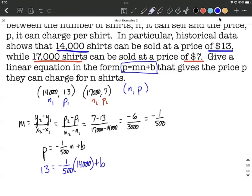So we still don't know what B is, but we can go ahead and combine together negative 1 over 500 times 14,000, and that's going to give us 13 equals negative 28 plus B. And to solve for B, we simply add 28 to both sides. Combining like terms, we're going to get B equals 41.